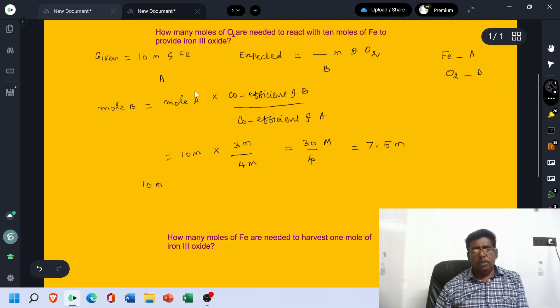10 mols of Fe plus 7.5 mols of O2 are added. We can get Fe2O3. How many mols? We can calculate.